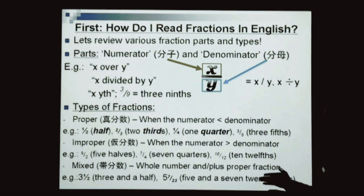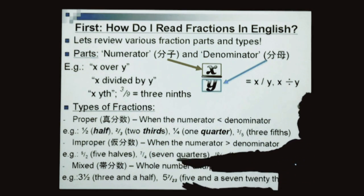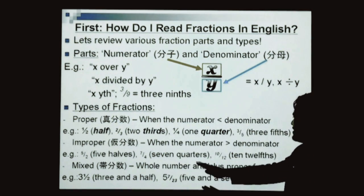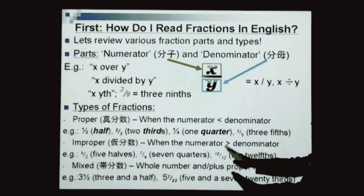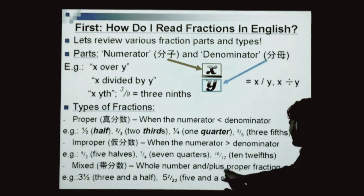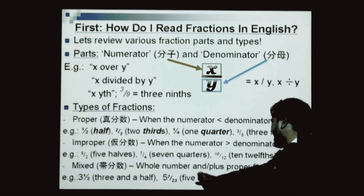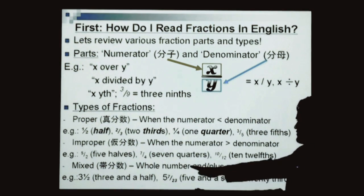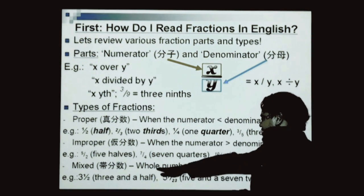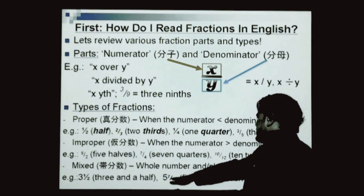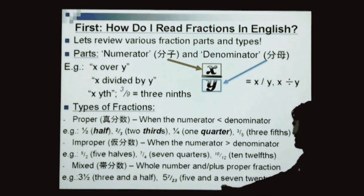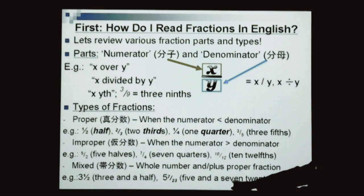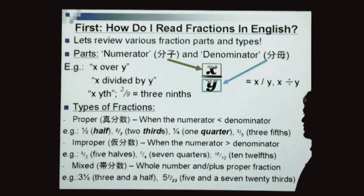The last type of fraction: mixed fractions. These are basically whole number fractions, or whole number plus a proper fraction. Two examples here: 3 and a half, and 5 and 7 over 23, or 5 and 7 twenty-thirds.